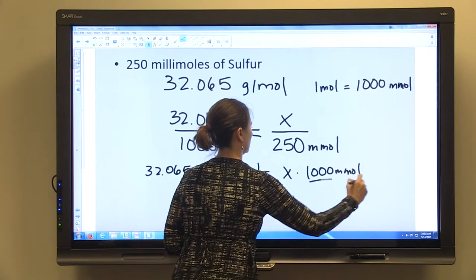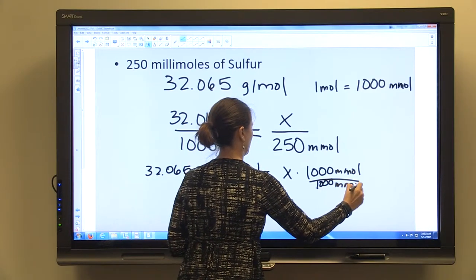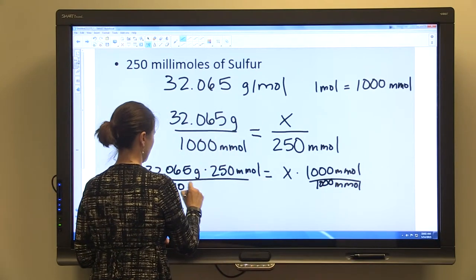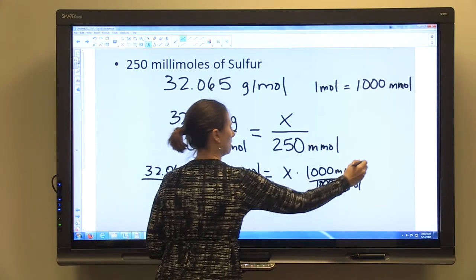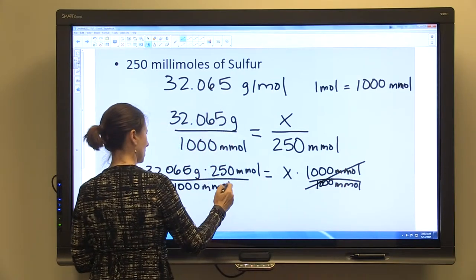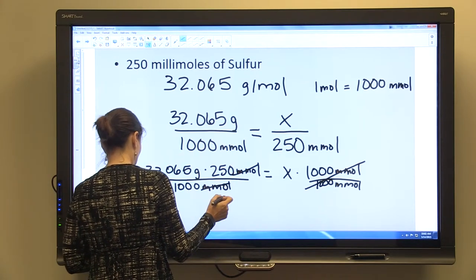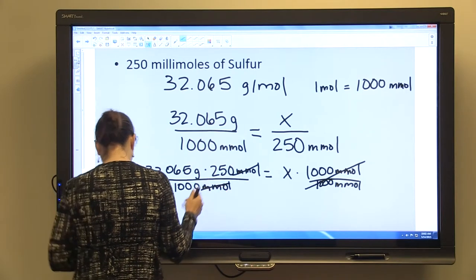We'll divide both sides by 1,000 millimoles. So when that cancels each other, these millimoles will cancel.